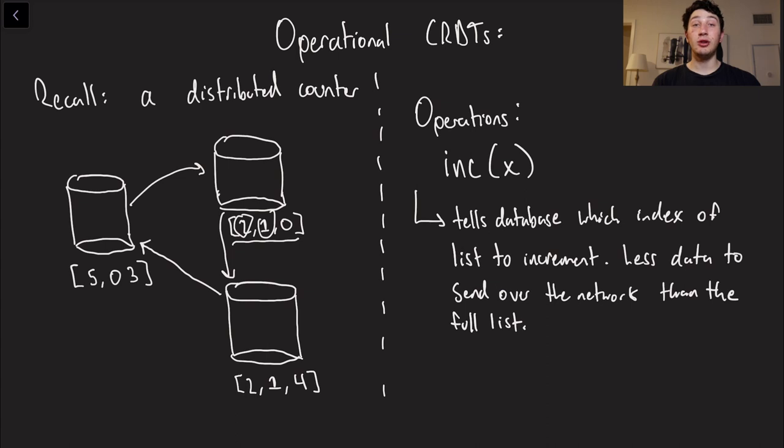So remember that we can demonstrate a distributed, eventually consistent counter by this list right here, which is basically a version vector, but the point is every single element of the list indicates how many increments we've seen from each leader. So this 2 delegates that we've seen two increments from the first leader, the 1 delegates that we've seen one increment from the second leader, and then the 0 says that we've seen no increments from the third leader.